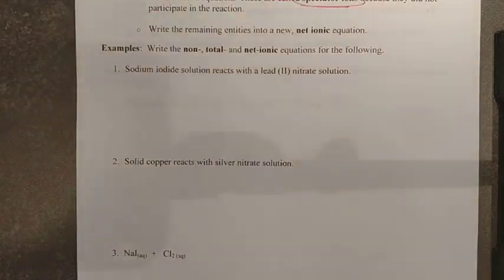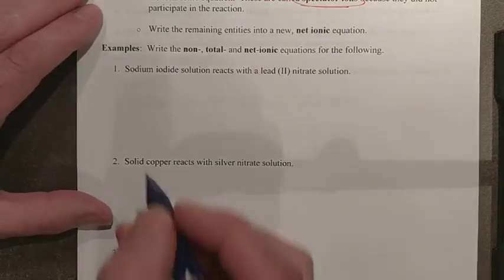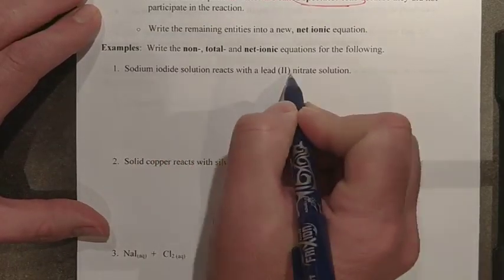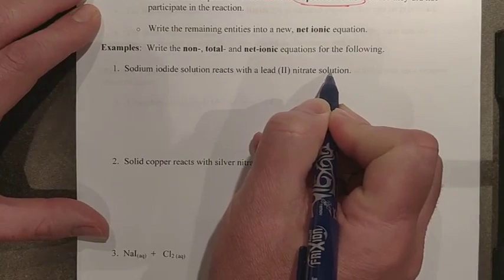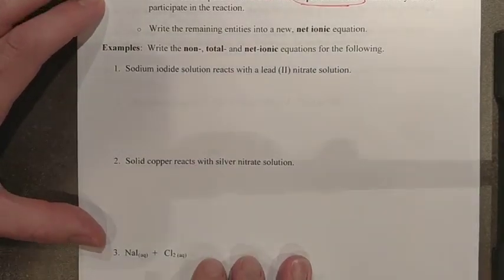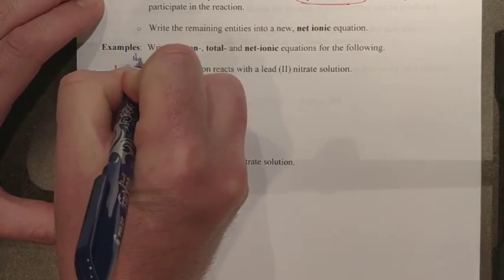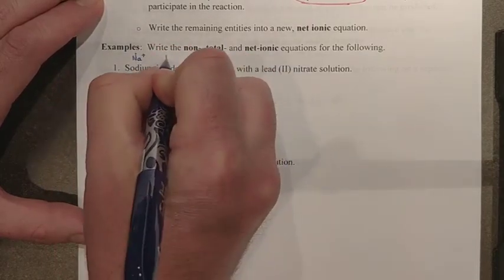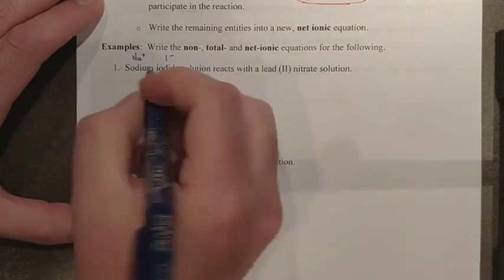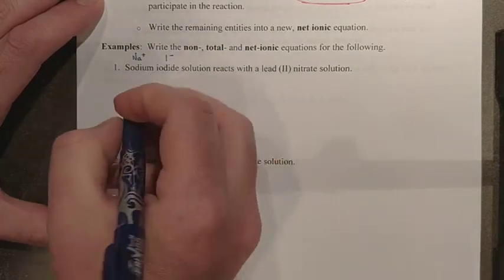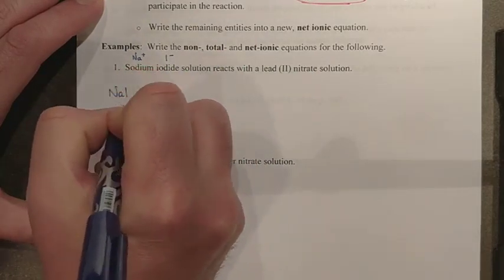Remember if they dissolve they dissociate. So here we have sodium iodide solution reacts with a lead two nitrate solution. Now we have to be able to come up with the compounds. So this is ionic metal and non-metal. Sodium is a 1 plus ion. Iodide is a 1 minus ion. So I should be able to predict the one-to-one ratio here and make NaI.